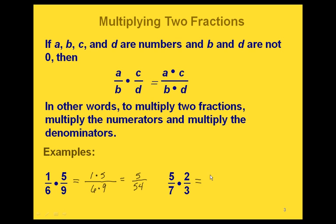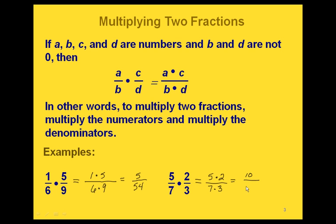The same way for this one: 5 sevenths times 2 thirds is going to give us 5 times 2 on the top and 7 times 3 on the bottom. Then if we multiply our values, we get 10 on the top and 21 on the bottom.